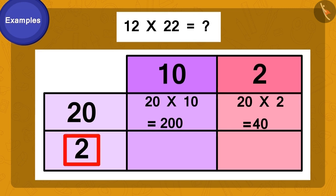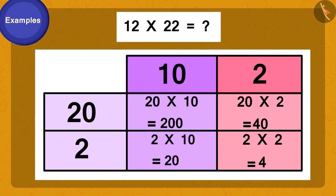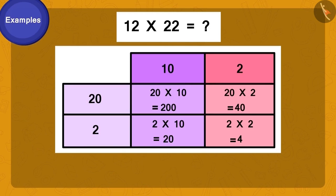Now, we multiply two of twenty-two by two of twelve. That's two times two is four. Finally, multiply two of twenty-two by ten of twelve. What would we get? Twenty. Now, it's very easy.